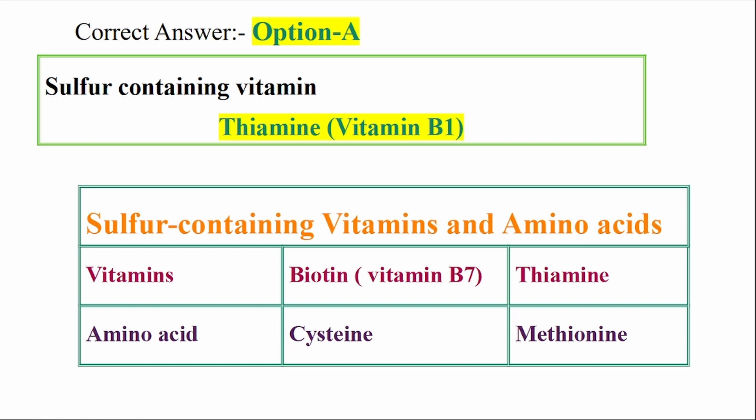So while amino acids are not vitamins, if you look at sulfur-containing vitamins, the answers are Biotin (B7) and Thiamine (B1). Sulfur-containing vitamins: Biotin B7 and Thiamine B1. Sulfur-containing amino acids: Cysteine and Methionine.